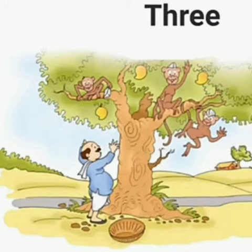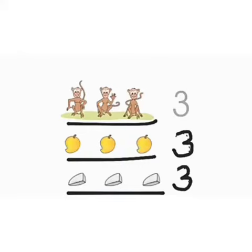See the picture, which are the things countable to 3? There are 3 monkeys, 3 mangoes, 3 calves.